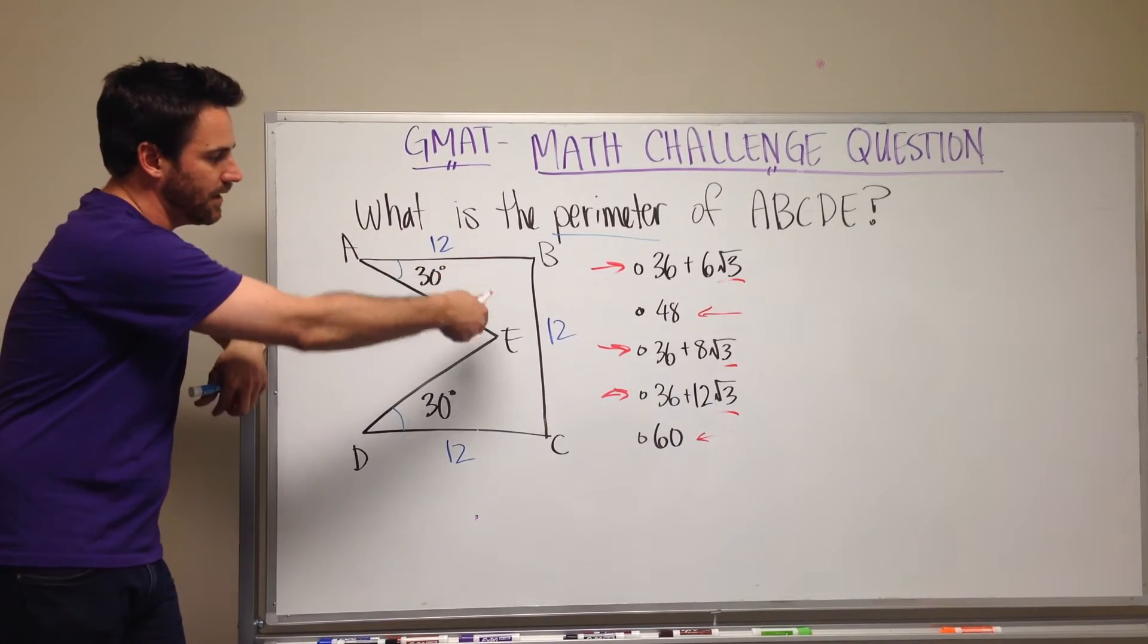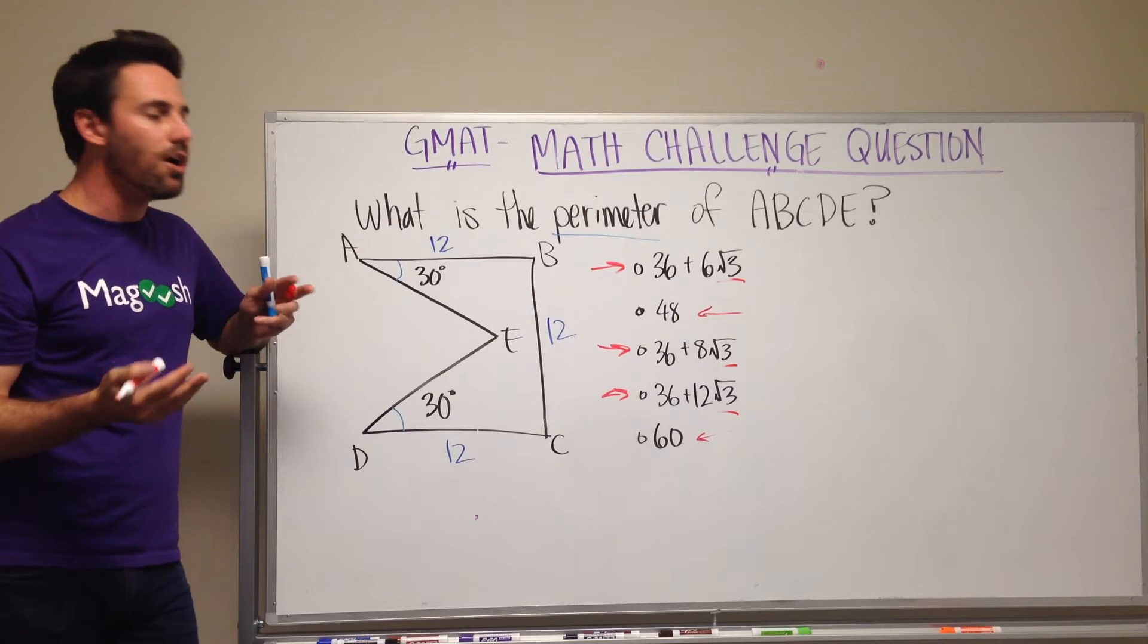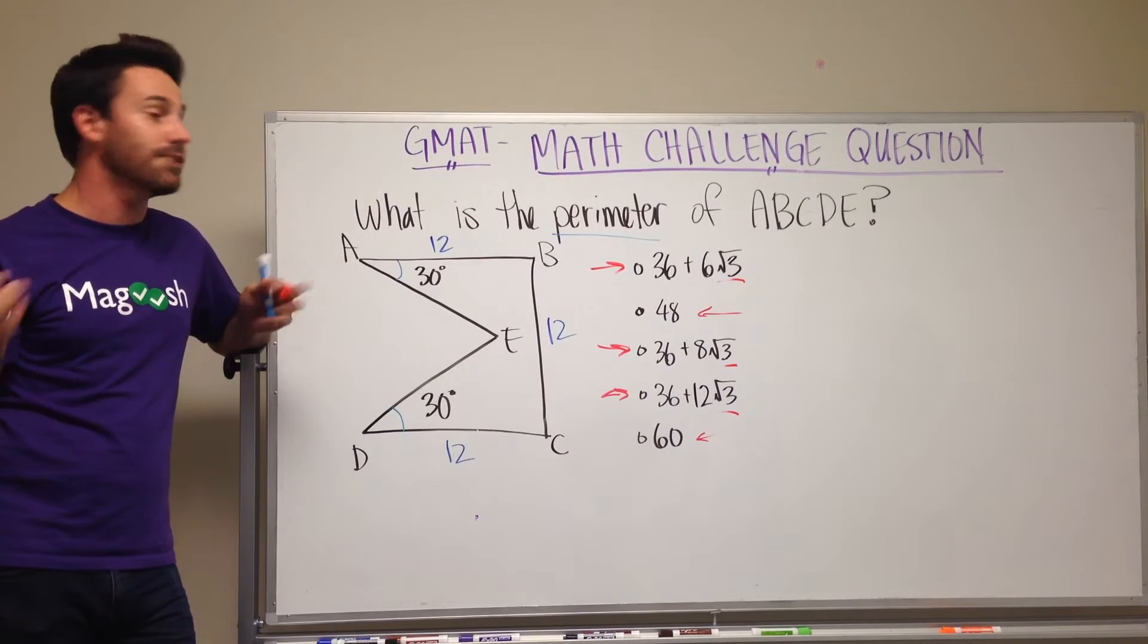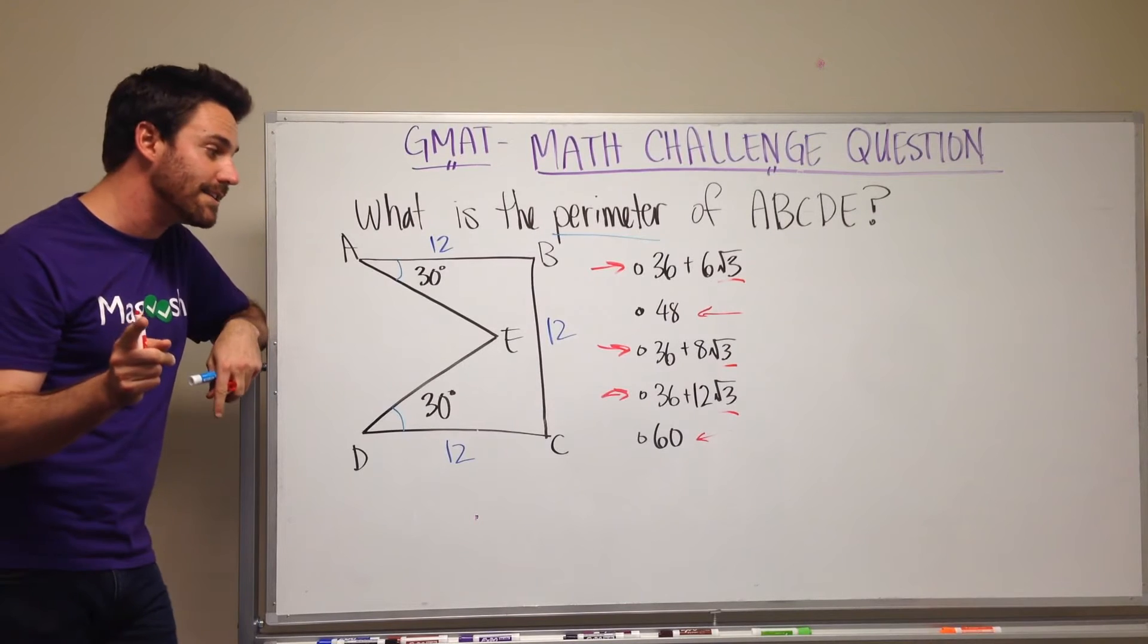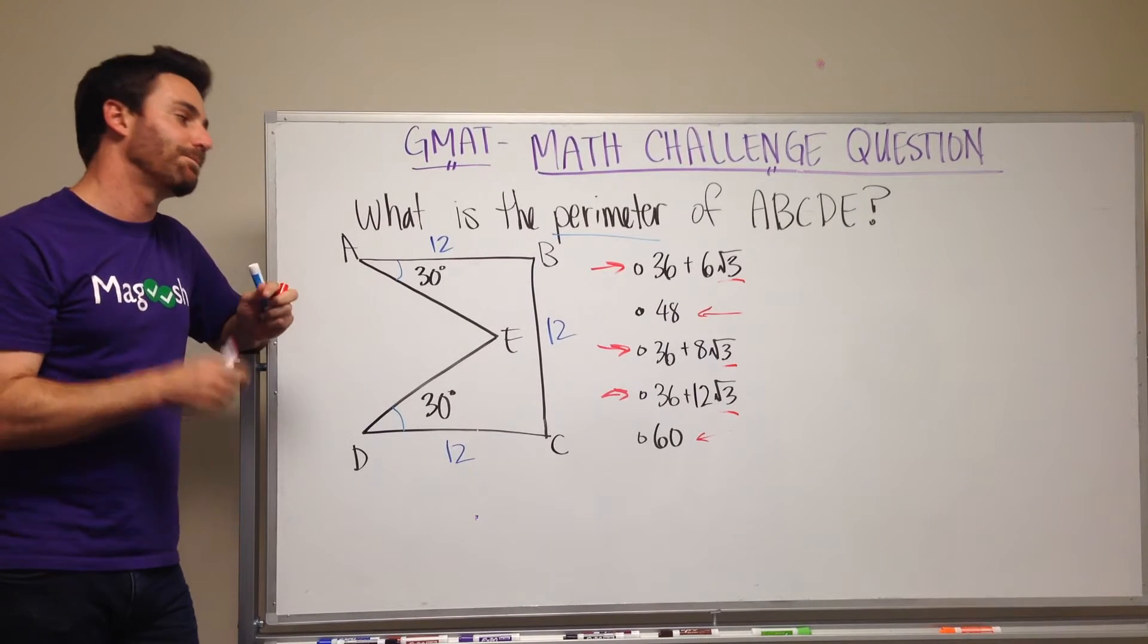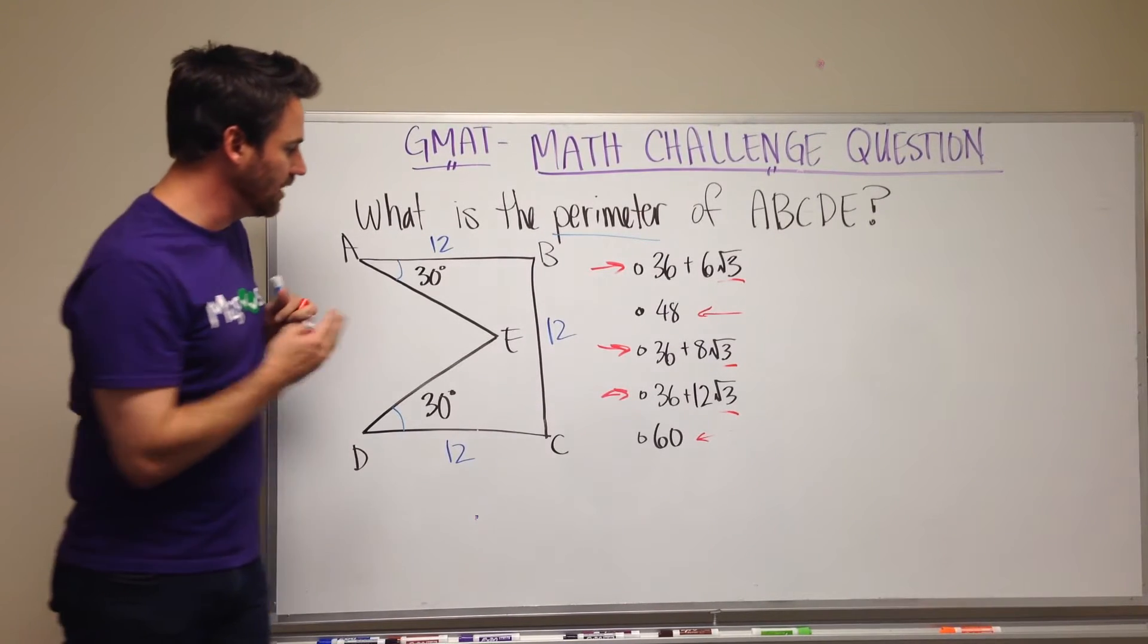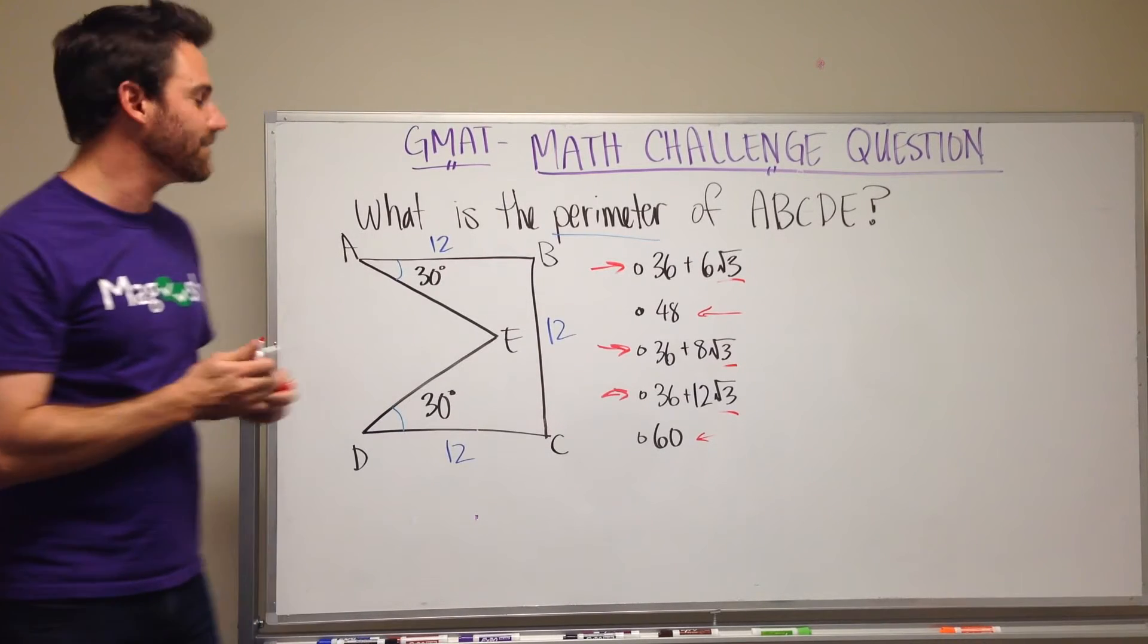So either way we're going to end up with radical 3 in the answer or not at all. Seeing this 30 degrees and seeing kind of like a triangle, I might think, oh, there might be a 30, 60, 90 triangle in here that I need to use to solve the problem. But this might be a distractor. So let's just dive in and look at the problem and try and solve it.